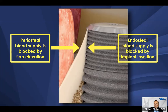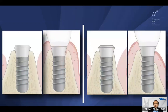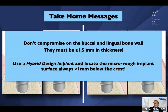The take-home messages: the resulting vertical bone resorption during healing is caused by avascular necrosis. When you have a thin buccal wall, remove it before placing the implant and perform GBR. When you don't act and have a thin intact wall, two months later you get soft tissue shrinkage and can probe the micro-rough surface — don't do that. Don't compromise on thin buccal or lingual bone walls. Also, go for hybrid-design implants — with a smooth surface in the crestal area — to eliminate the risk of plaque accumulation.